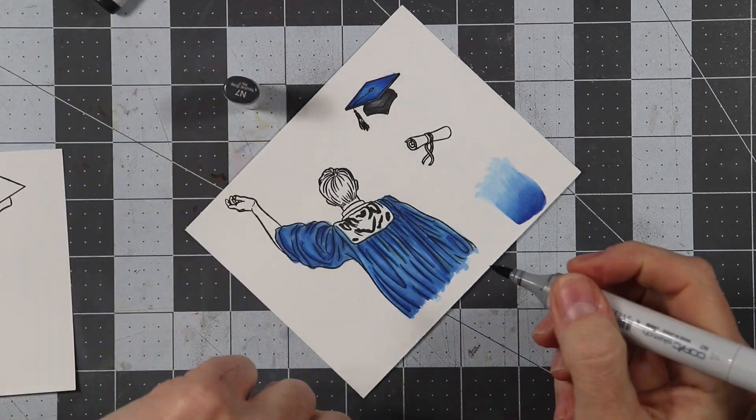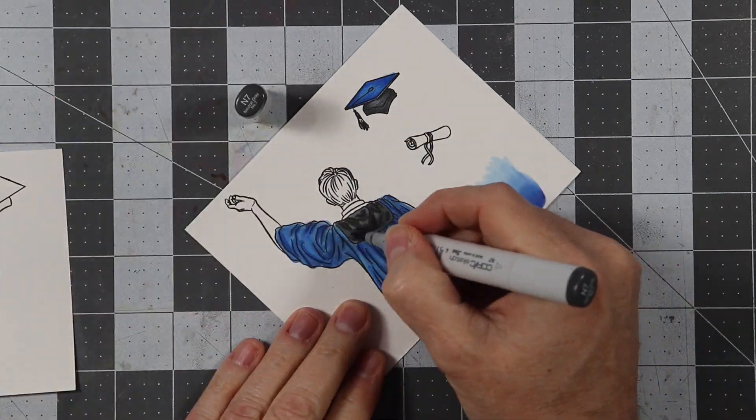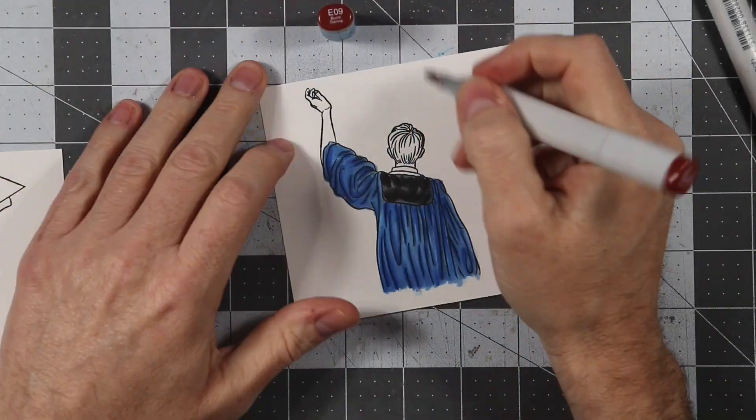Now I'm going to do the second piece of the gown here. I'm just using some grays, and I'm just doing the same thing—lighter to darker and then darker to lighter.